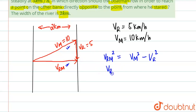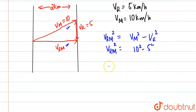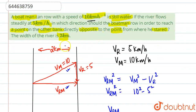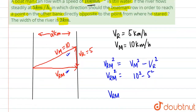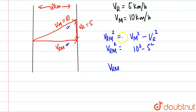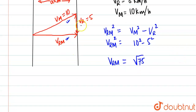So vrm² = vm² − vr² = 10² − 5² = 100 − 25 = 75, giving vrm = √75. However, we mainly need to find the direction angle theta, so vrm = √75 is not required further. We just need this angle theta.